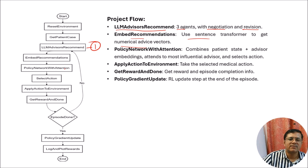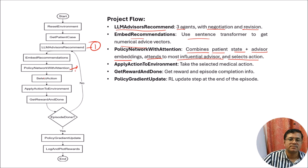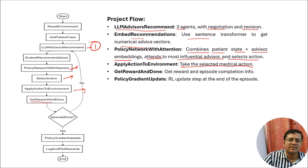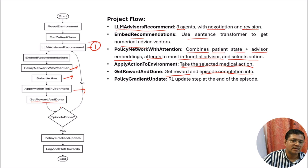Next is the policy network with attention. It combines the patient state plus advisor embeddings, attends to the most influential advisors, and selects the action. Once it selects the actions, we apply those actions to the environment. Applying actions to the environment means taking the selected medical actions to a proper application. After that, functions like get reward and done provide episode completion information — meaning you have diagnosed the healthcare situation correctly and the episode ends.